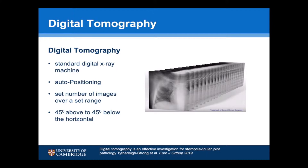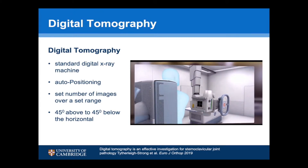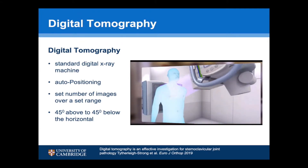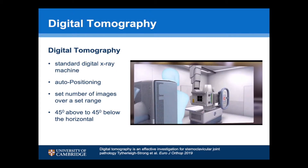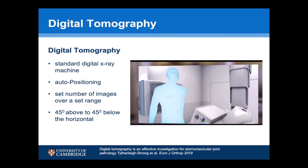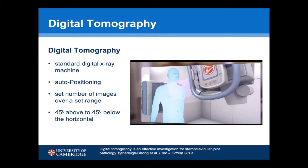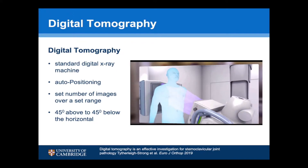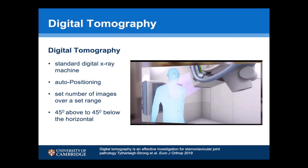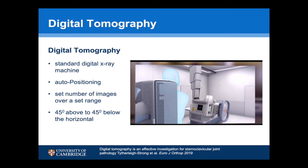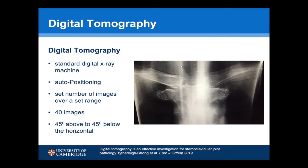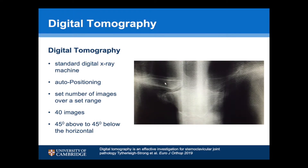Digital tomography can be undertaken using a standard digital x-ray machine. Using auto-positioning, the x-ray machine can be programmed to take a set number of images over a set range. We set our machine to take 40 images between 45 degrees above and 45 degrees below the horizontal — taking a matter of five seconds and exposing the patient to very limited radiation. This can be done as a day case in the x-ray unit without the time and expense of a CT or MRI scan. The images can then be viewed on a CINI setting, giving a nice interpretation of any osteoarthritis.